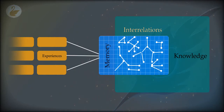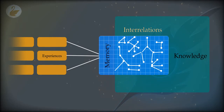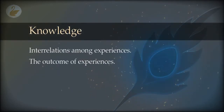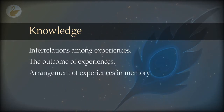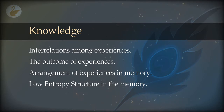This will be the definition of knowledge for the purpose of this series on the path of knowledge. You already know what an experience is — it is that which is appearing. Memory will be explored in more detail later, but for now you can see it as an ability of the mind. In more technical terms, knowledge is a low-entropy structure found in the memory — meaningful, informative, and less random than raw experience.